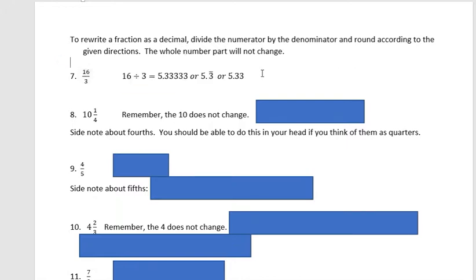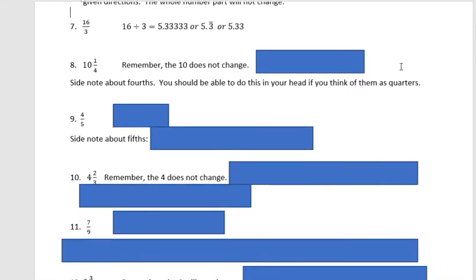But sixteen divided by three is 5.3333. I could go forever because I have a repeating number here, three. Rounding that to the hundredths, you can see the third number out would be three. Rounding back to that second place, I would still have a three, so five and thirty-three hundredths.